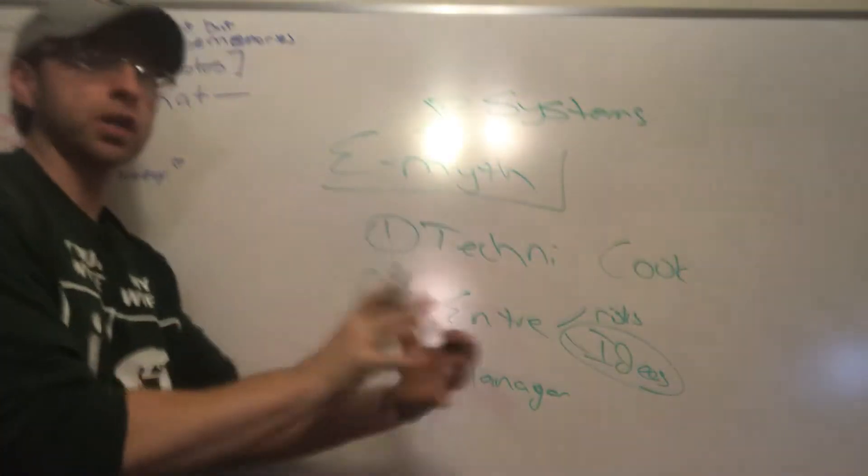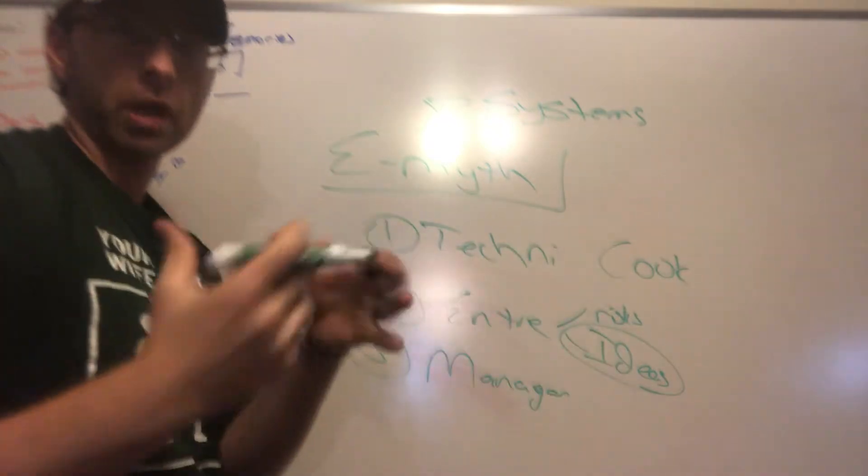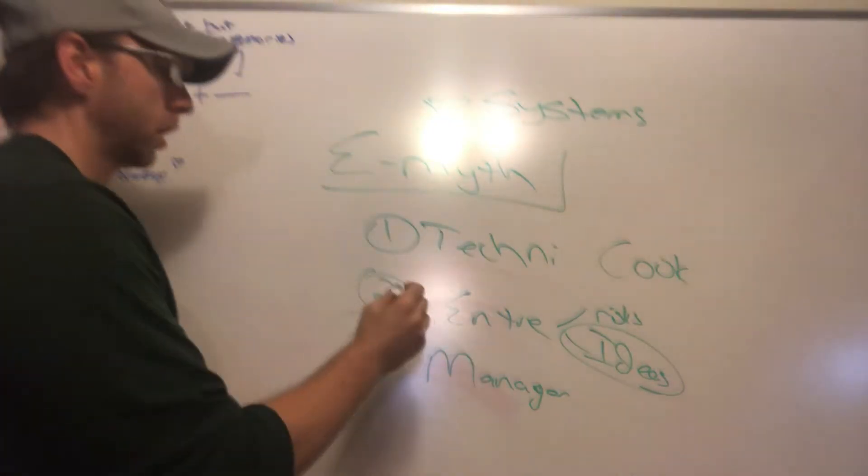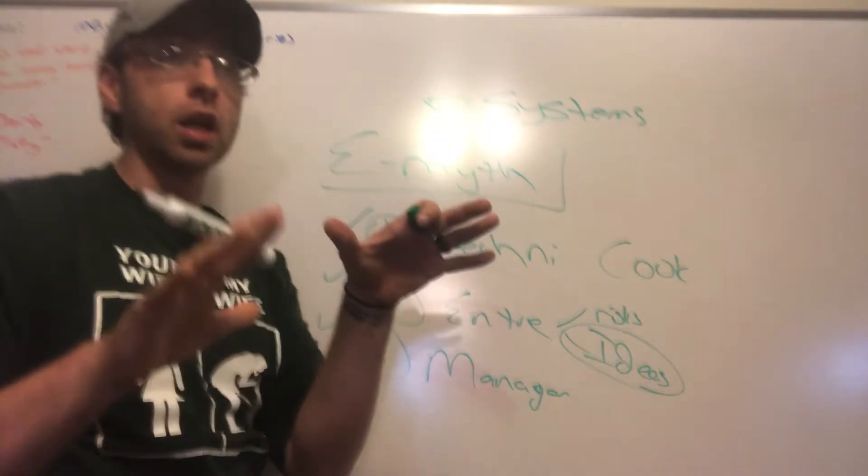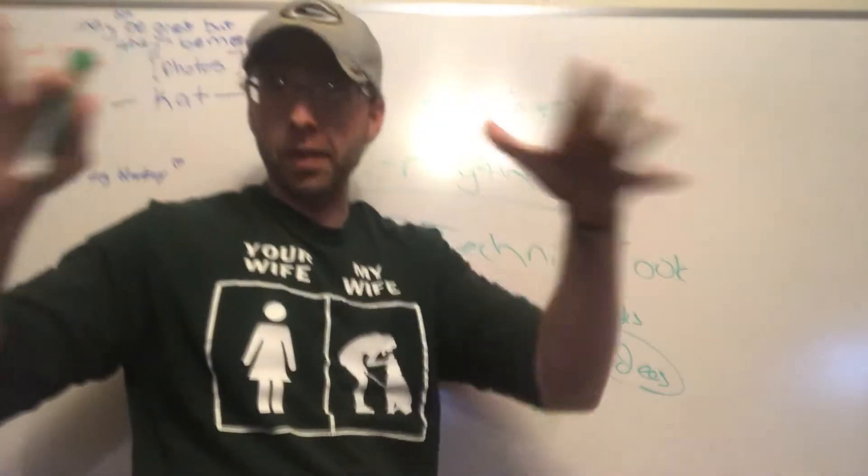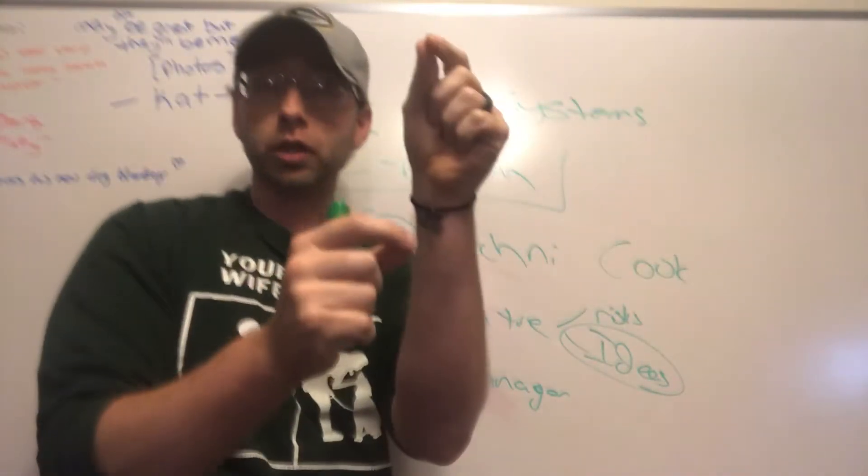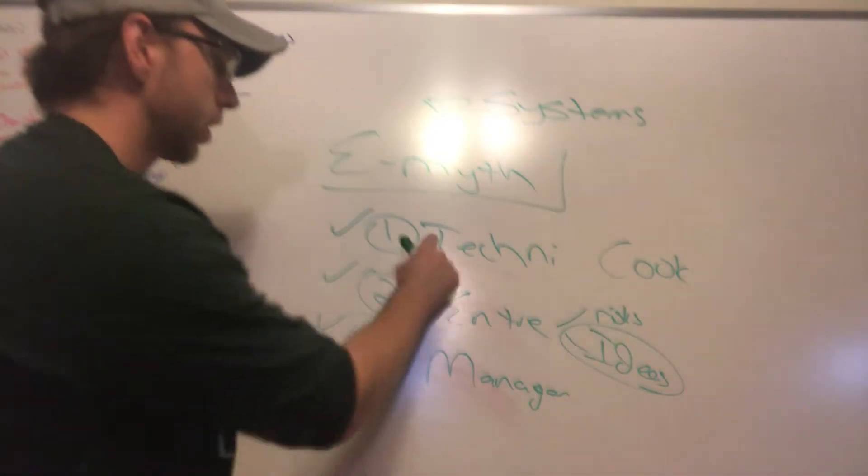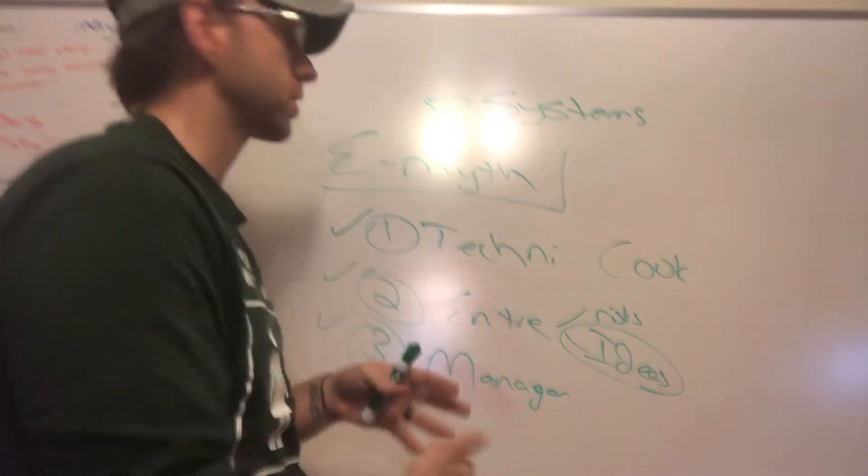You create something that makes yourself obsolete. You create a program, you create a system. He calls it McDonaldizing stuff. You create a system that kind of eliminates the need for all three, and you get to just be the guy working on the business, overseeing, instead of in the business. You're like the technician doing stuff. And each of these three hats kind of want to do stuff. And you kind of know what your place is in these three.